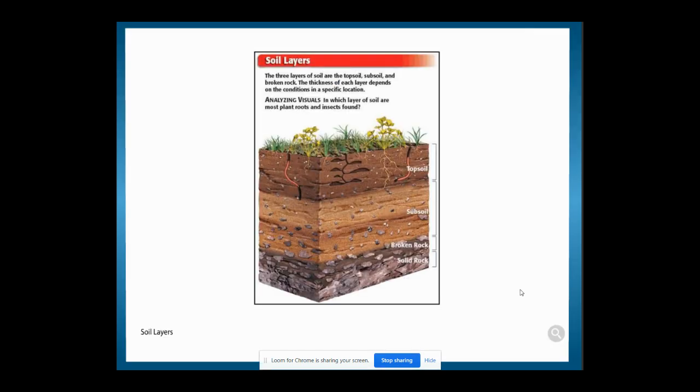Soil Layers: The three layers of soil are the topsoil, the subsoil, and broken rock. The thickness of each layer depends on the conditions in a specific location. Here's something to think about: In which layer of soil are the most plants, roots, and insects found?